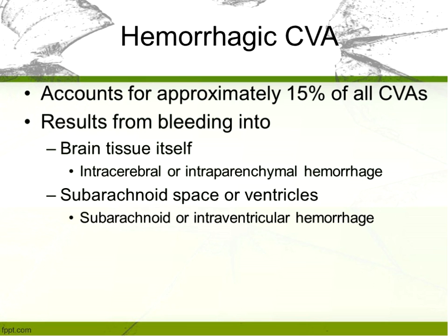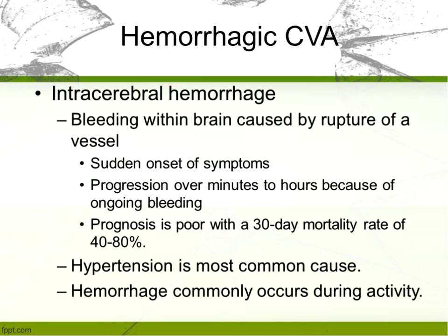Hemorrhagic CVAs account for about 15% of all CVAs, and this is when you have an actual bleed. The bleed can go into either the brain tissue itself or the subarachnoid space or ventricles. Intraparenchymal hemorrhage refers to bleeding into the functioning part of the brain — the neurons and the glial cells.